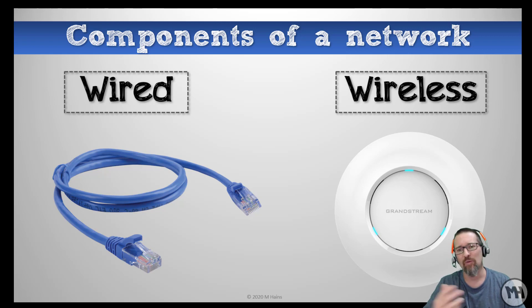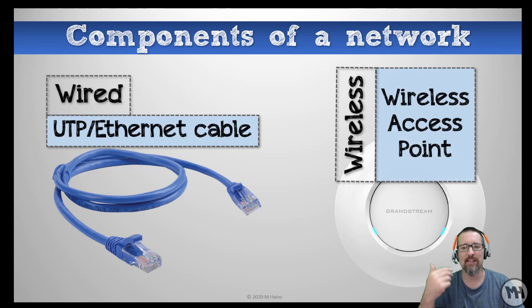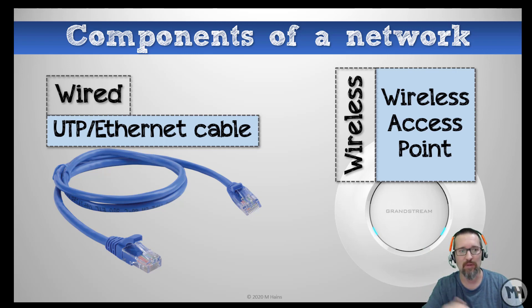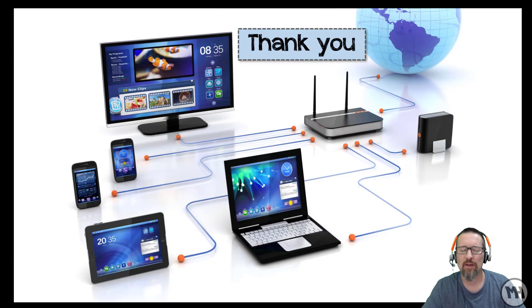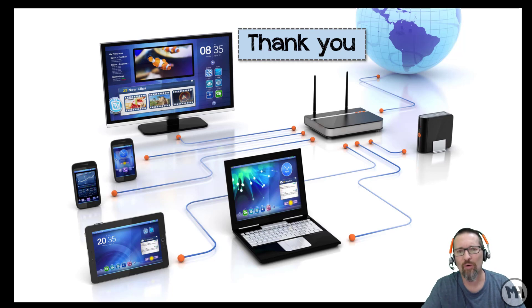Wireless then gives you access to a wireless network, and if there's internet there you'll have access as well. That is a UTP or ethernet cable, and on the right hand side we have a wireless access point. In a nutshell, those are the basic components of a computer network — something you would find at home, at school, or in a small business.